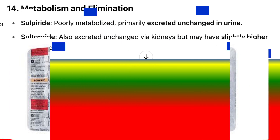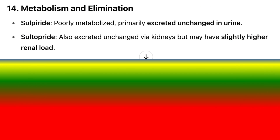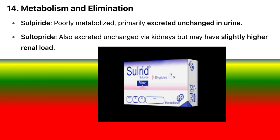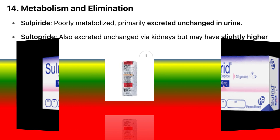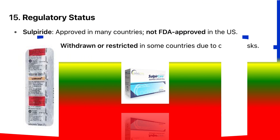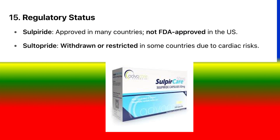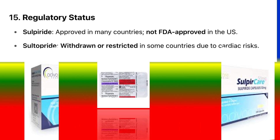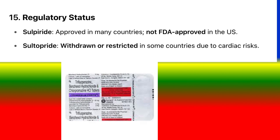14. Metabolism and elimination: Sulpiride is poorly metabolized and primarily excreted unchanged in urine. Sultopride is also excreted unchanged via the kidneys but may have a slightly higher renal load. 15. Regulatory status: Sulpiride is approved in many countries but not FDA-approved in the U.S. Sultopride has been withdrawn or restricted in some countries due to cardiac risks.